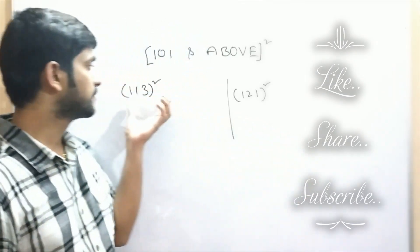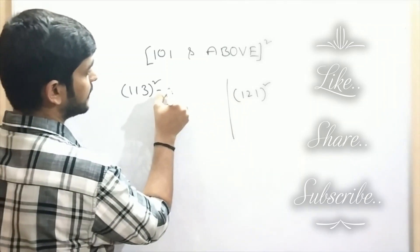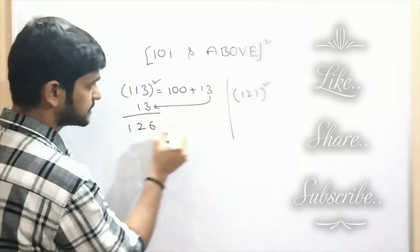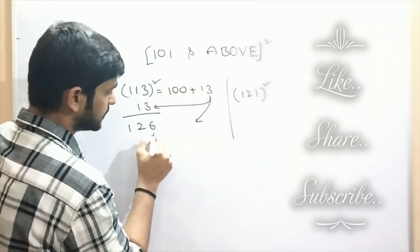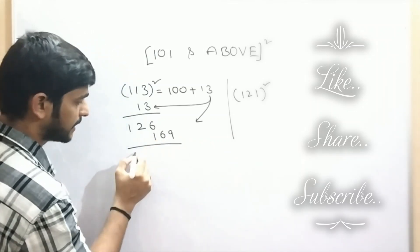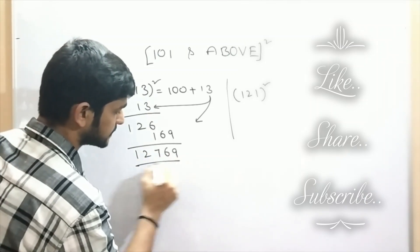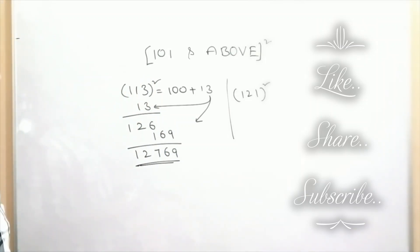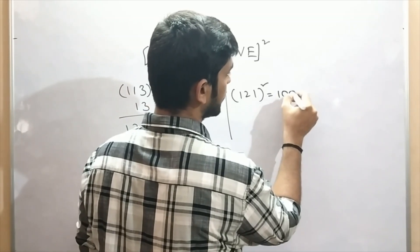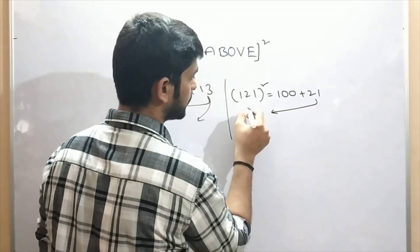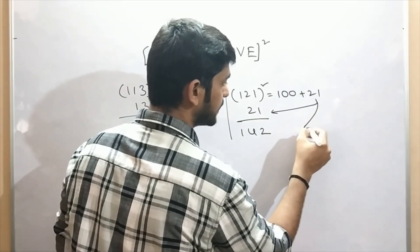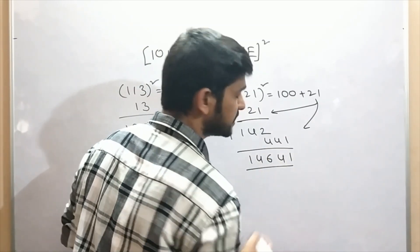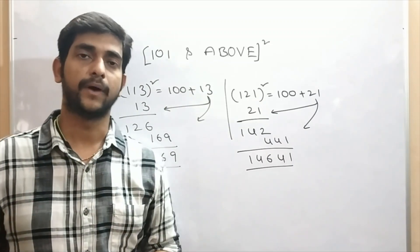Let's consider the other two numbers: 113 and 121. 113 we can write it as 100 plus 13. Add this 13 to 113 — so we are getting 126. 13 squared will be 169. As it is a 5-digit number, we write it as 12769. So 12769 will be the answer for 113 squared. 121 we can write it as 100 plus 21. Add 21 to 121 — here we are getting 142. And 21 squared will be 441. So the answer will be 14641 for 121 squared.